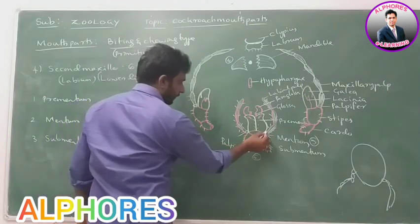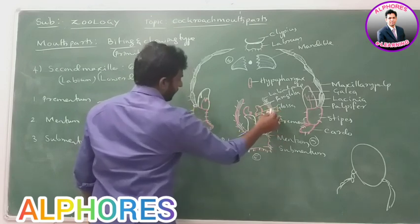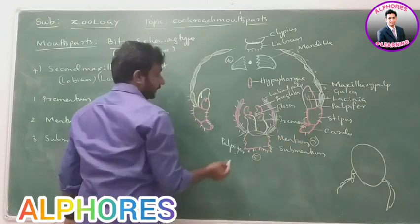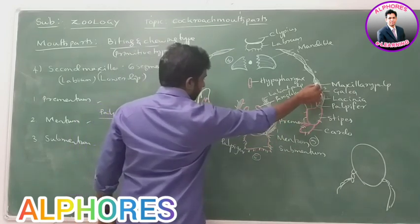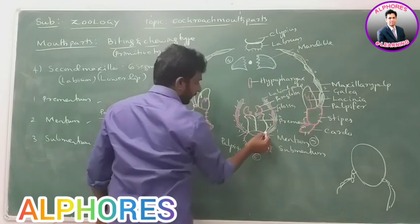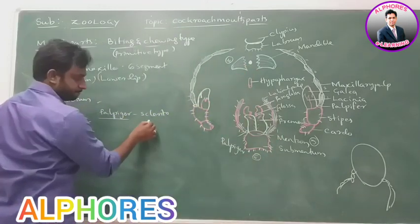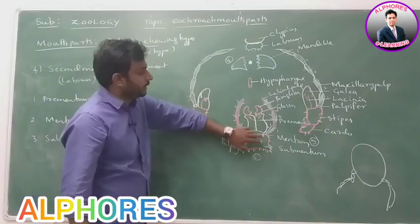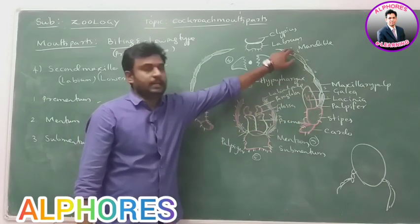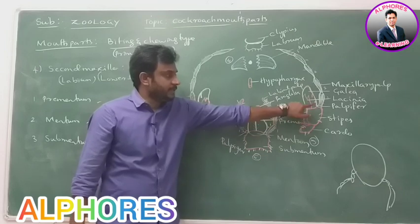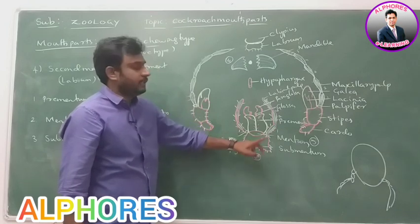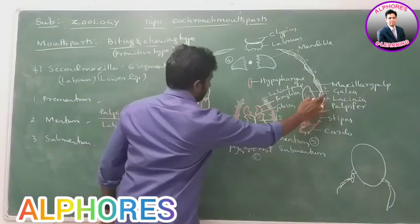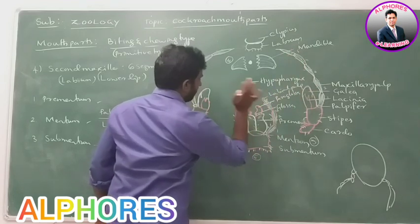On the palpiger of the first maxillae, five-segmented maxillary palp arises. On the palpizer of the labium, three-segmented labial palp arises. The palp present on the labium is called labial palp; the palp present on the maxillae is called maxillary palp. Palpifer gives rise to five-segmented maxillary palp; palpizer gives rise to three-segmented labial palp.